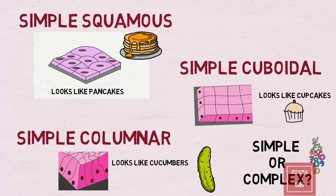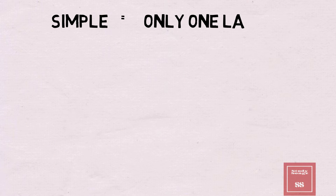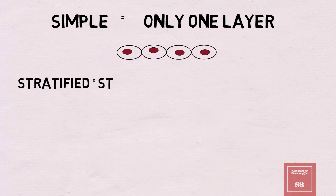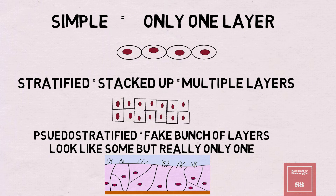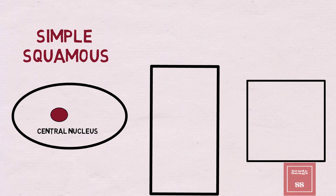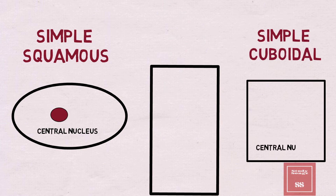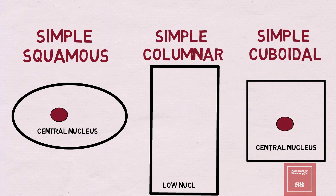Simple means only one layer. Stratified — stacked up, multiple layers. Pseudostratified looks like a big bunch of layers, but really only one. Simple squamous has a central nucleus. Simple cuboidal has a central nucleus. Simple columnar has a low nucleus.